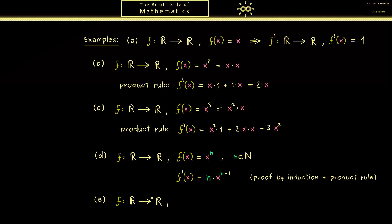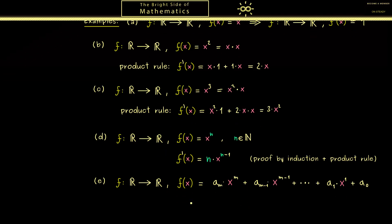With this we are ready for the general example of a polynomial function. The general formula has coefficients a0, a1, and so on. Using the sum rule and the power rule, we can form the derivative for every term in the sum separately: we don't change the coefficient, we put the power in front and reduce the power by 1. What we get is a new polynomial where the last coefficient a0 has vanished and the new constant term is now a1.